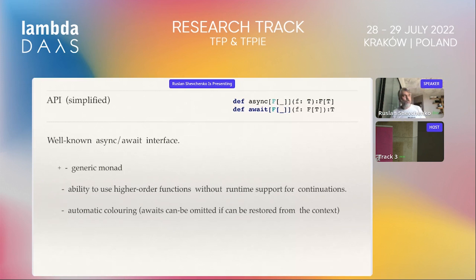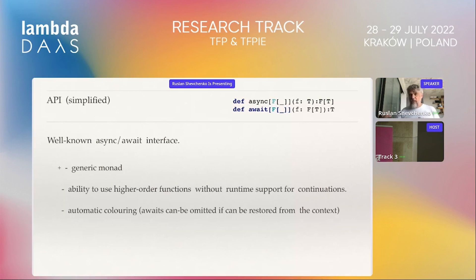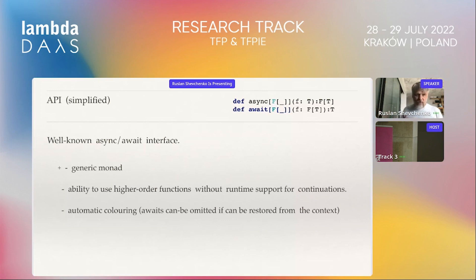Also, we solve in a limited way the problem of higher-order functions. You can use await in the argument of higher-order functions like map or filter, and it provides automatic colouring.